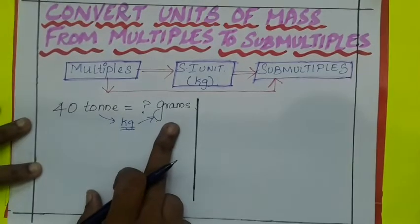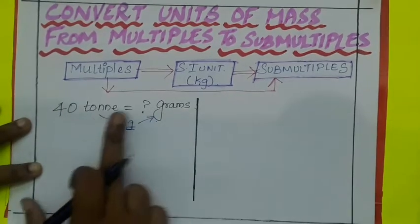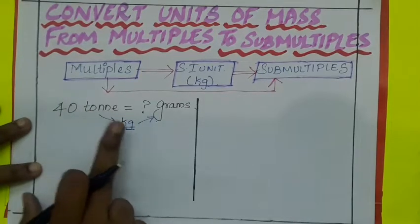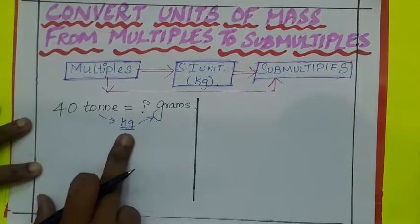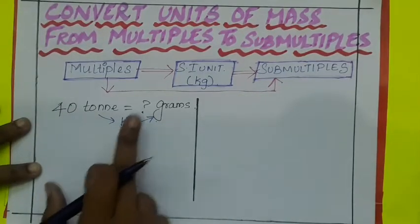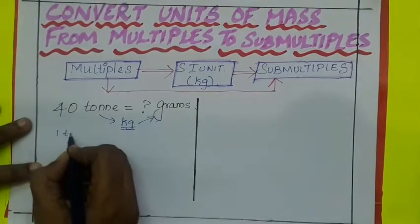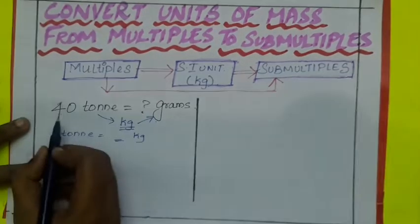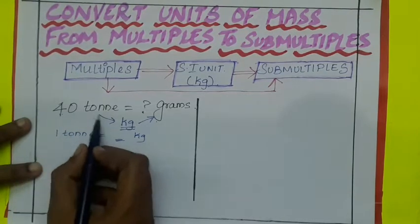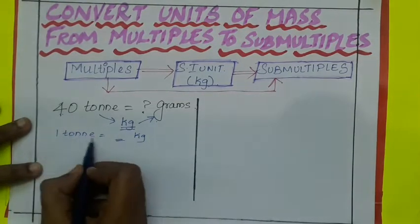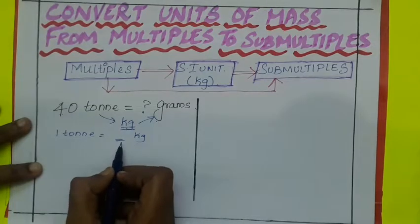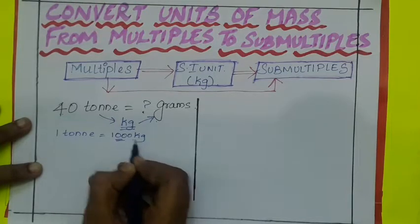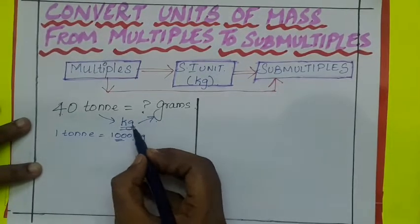Let's see how to solve the problem. 40 ton is equal to how many grams? Here ton is unit of multiples and grams is unit of submultiples. So convert unit of multiples into SI unit. SI unit of mass is kilogram and then convert kilogram into gram. So 1 ton is equal to how many kilograms? We should not use this value here because we are converting only the units. 1 ton is equal to 1000 kilograms.